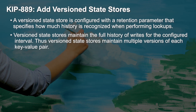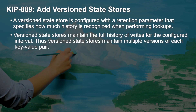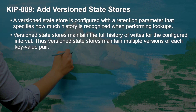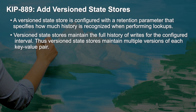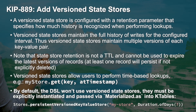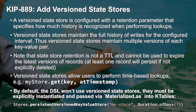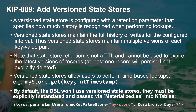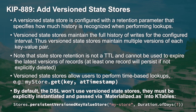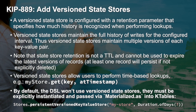KIP 889 provides the base implementation of versioned state stores, which add a temporal element to state stores in Kafka Streams. When records are inserted into a state store that implements the new versioned state store interface, they need to include a timestamp. The get method to fetch from a versioned state store also includes an as-of timestamp. But it's not enough to just implement versioned state stores — we need to provide a means for these to be recognized and utilized by the Streams DSL.